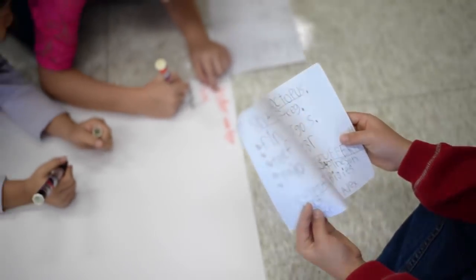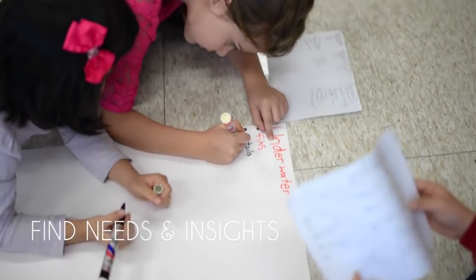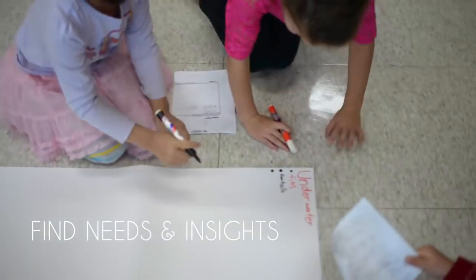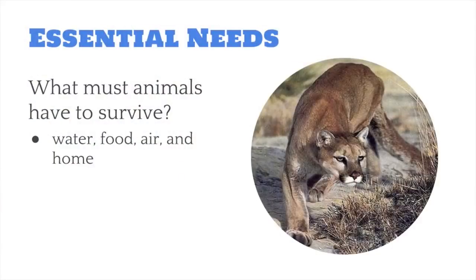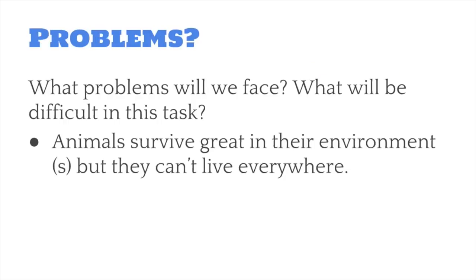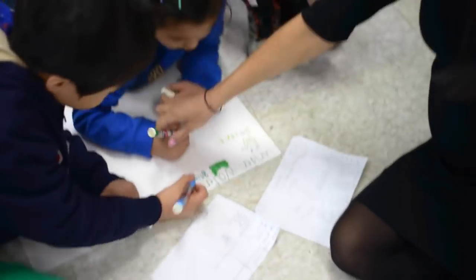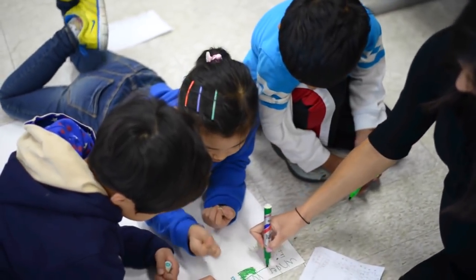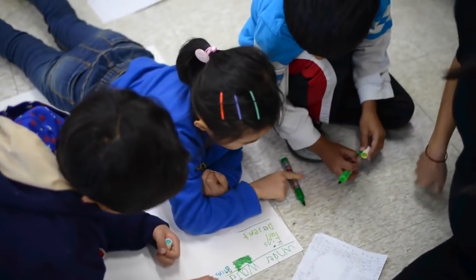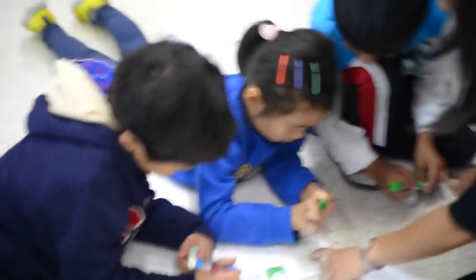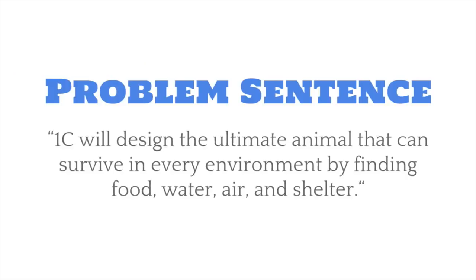In the define stage, the class discussed the needs of all animals and tried to find insights that would affect the design of their ultimate animal. They soon figured out that all animals had external parts that serviced their essential needs, as well as helped them survive in their unique environments. Next, we placed students in groups and had them list all the external parts animals would have in different habitats. Using the most significant need and insight, the class developed this problem sentence: 1C will design the ultimate animal that can survive in every environment by finding food, water, air, and shelter.